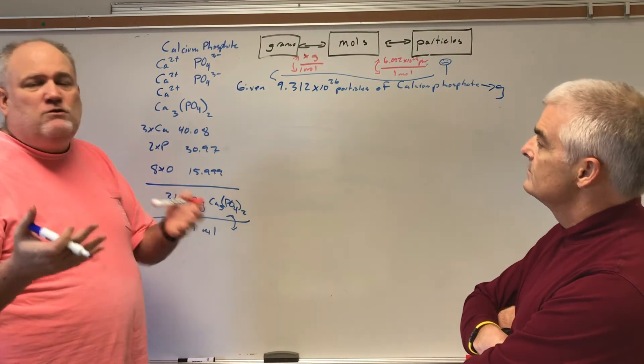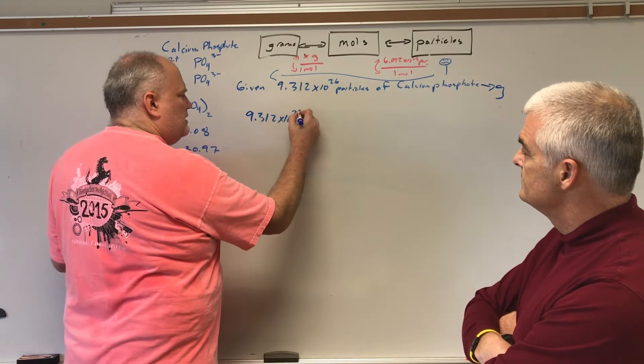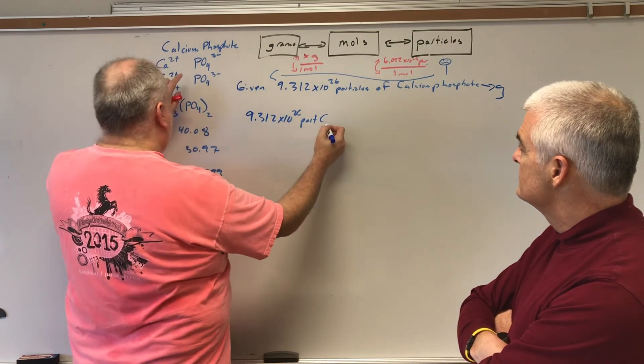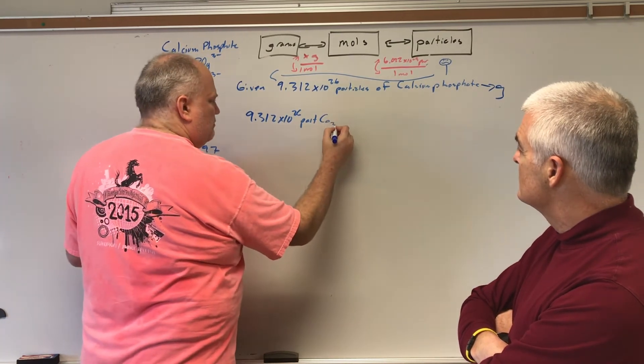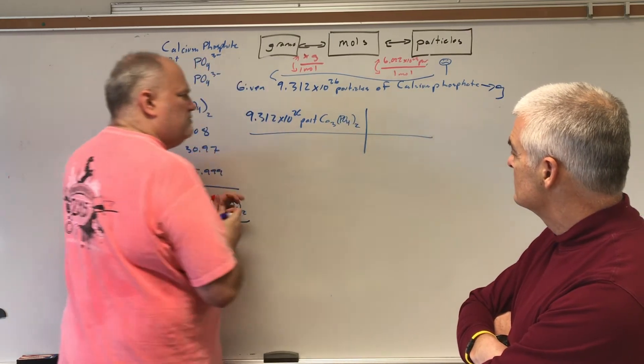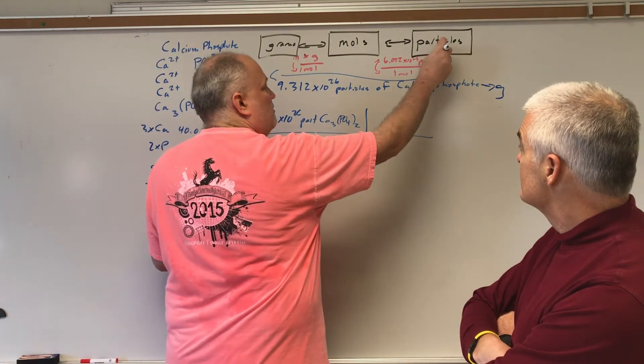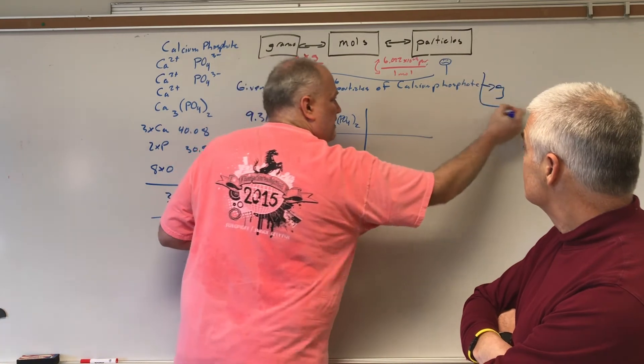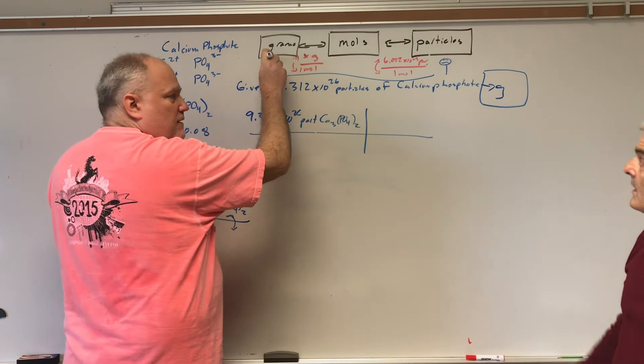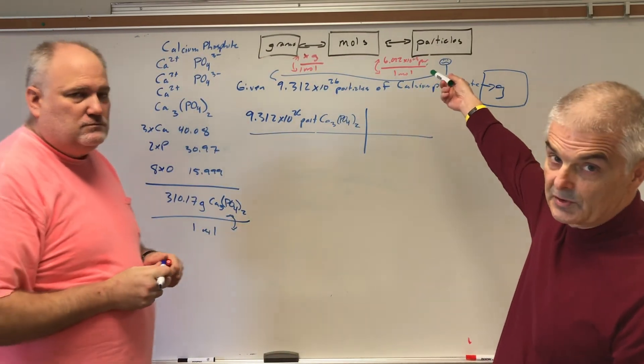What we probably want to do is start from particles and set up our table. Any time that we don't know what we're doing, let's just start by putting it in our train tracks. I'm going to write 9.312 times 10^26 particles, and I'm going to write the actual formula Ca3(PO4)2 and set it up in our train tracks. Whatever we start you off with, look and see where you are on the table. We're at particles right now.